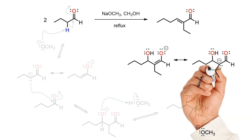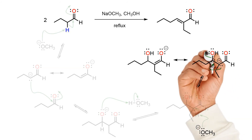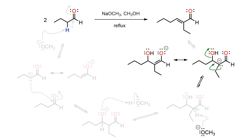Loss of the hydroxyl group, which is the rate-determining step in this E1CB process, then results in the conjugated alpha-beta unsaturated condensation product.